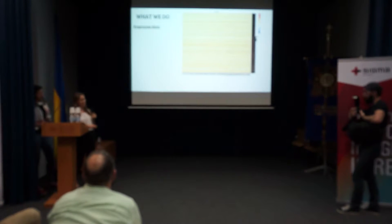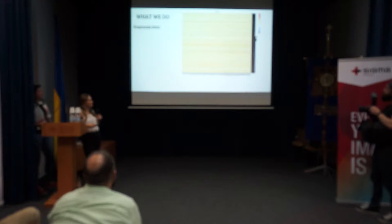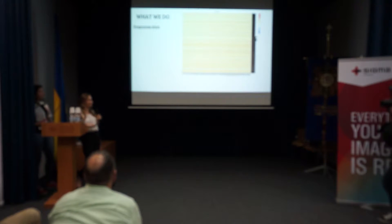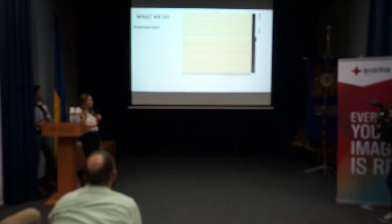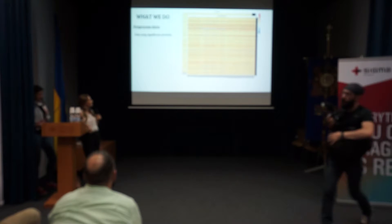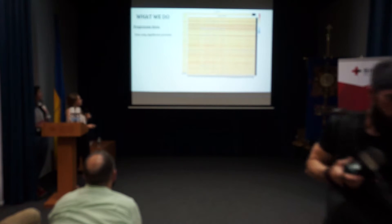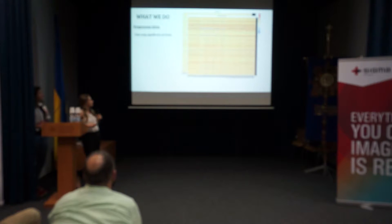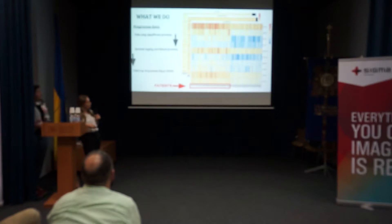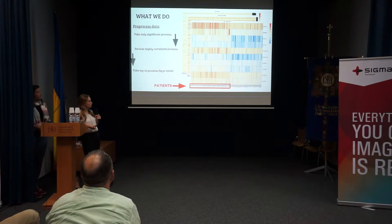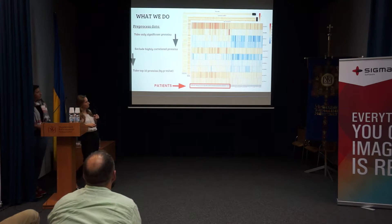As with the previous team, most of the work was taken up by preparing the data for processing. We took only significant proteins by applying a T-test, then we excluded highly correlated proteins, and eventually we took the top 10 proteins by their p-value to work with in our model. From that picture you can see that they are already separated for ill and healthy people.